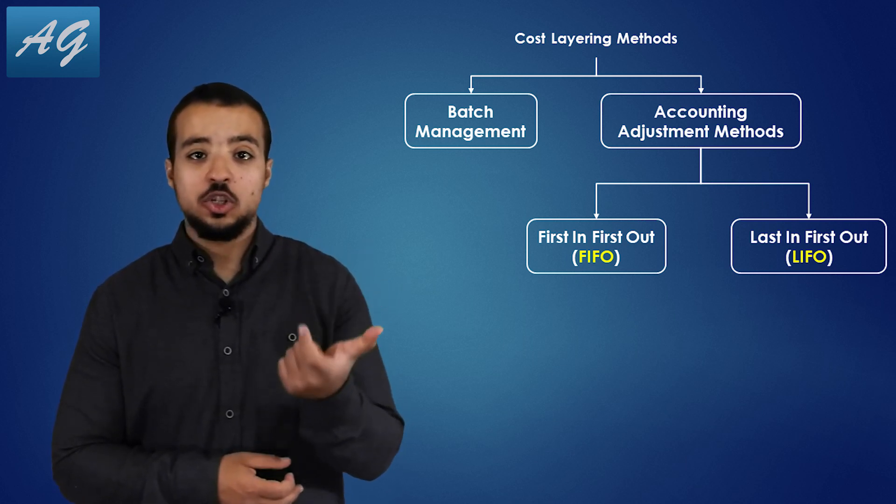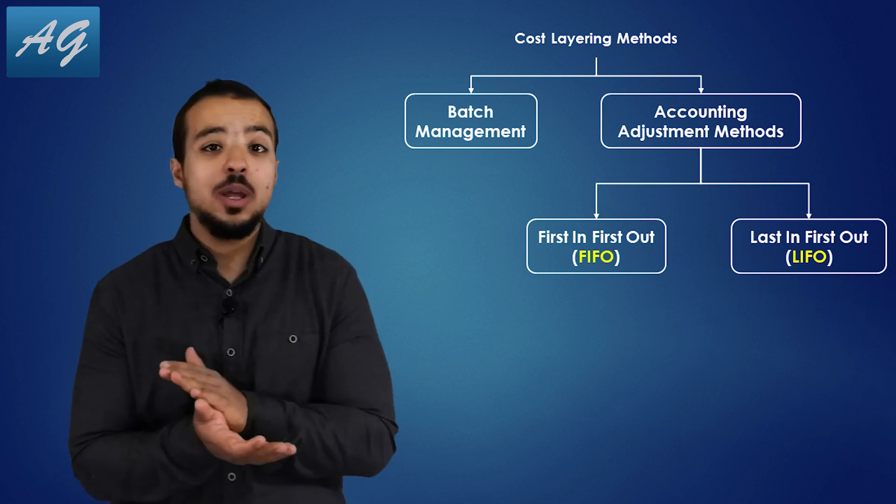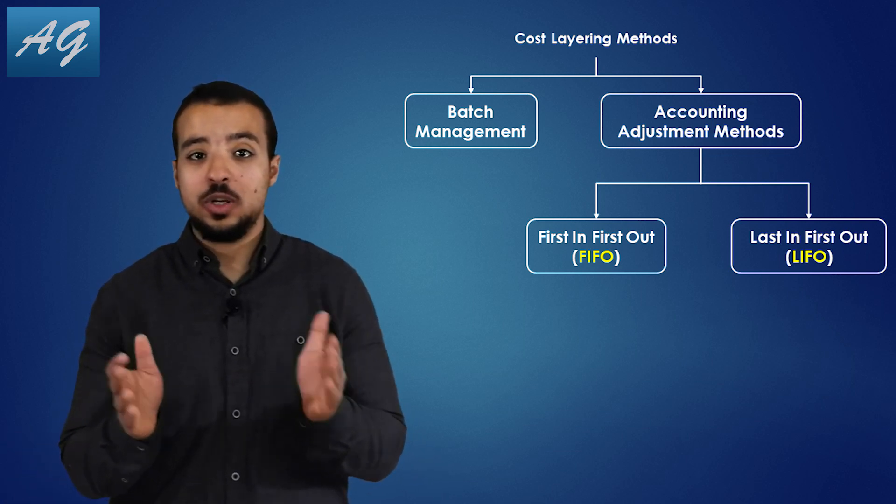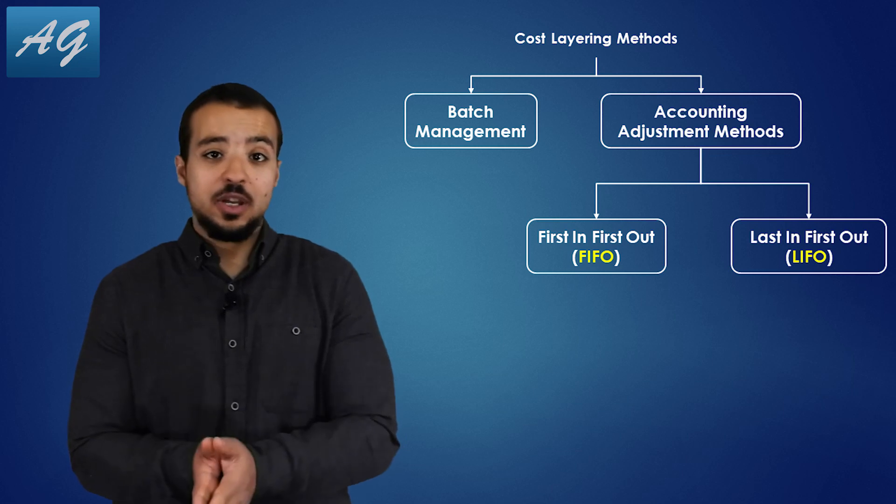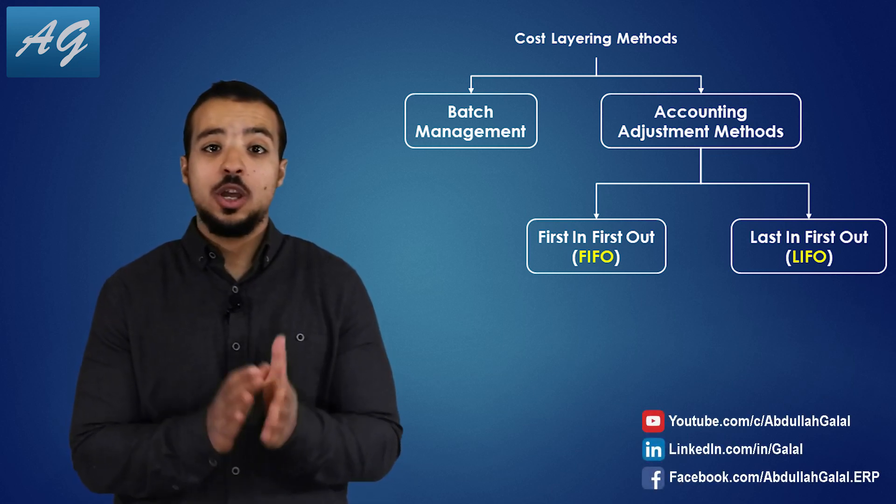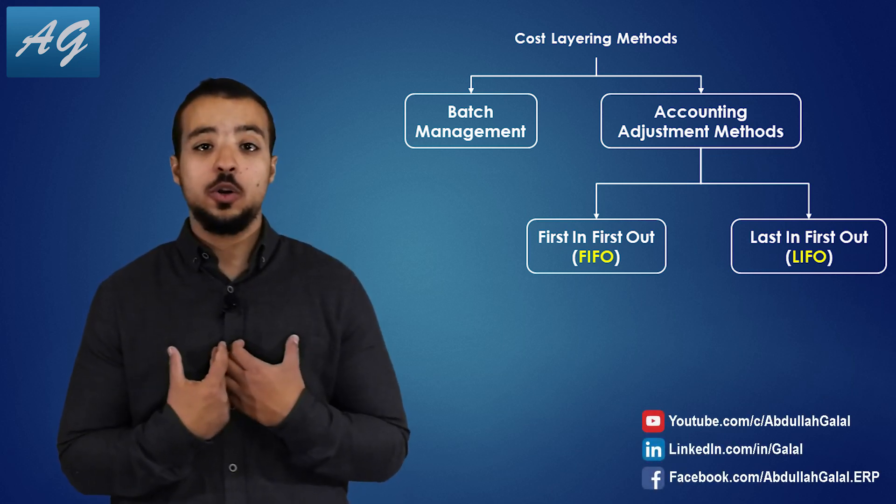And again, these are accounting adjustment methods, so they have no impact at all on how I'm going to treat my inventory physically. So in first in first out and last in first out, we only adjust our accounting records so it can reflect the difference in cost between the different units we purchase.